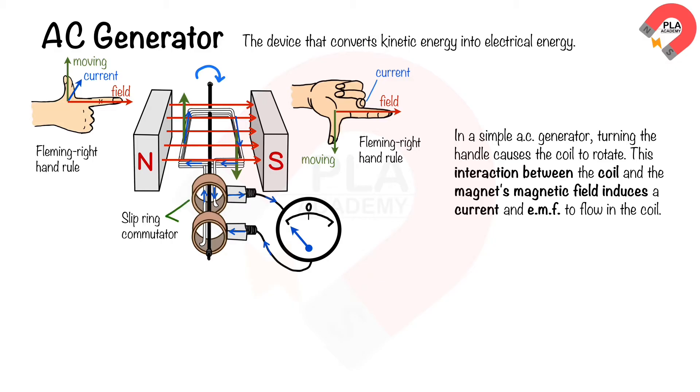This is the slip ring's commutator, and this is carbon brushes. The contact between the slip rings and carbon brushes are sliding contacts.